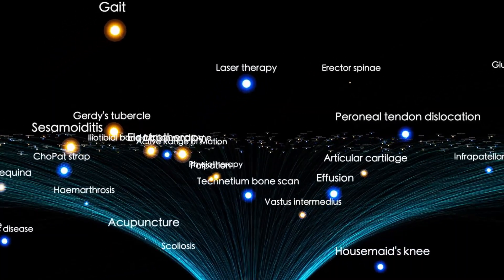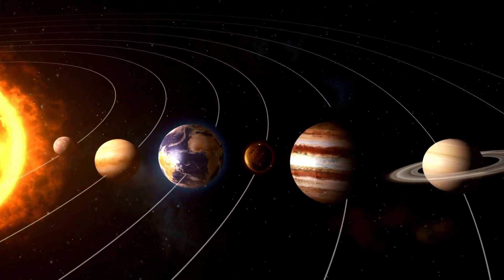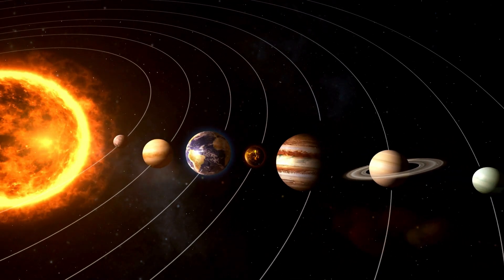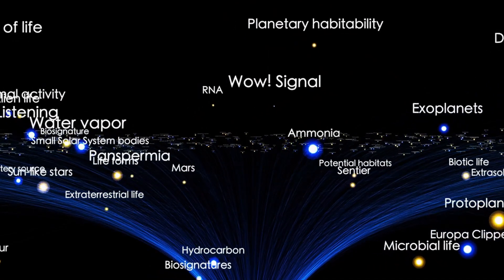Since the Great Dimming, astronomers haven't taken their eyes off Betelgeuse. They've kept watching, collecting data, and studying the star's behavior to better understand what's going on inside. And more surprises have come to light.